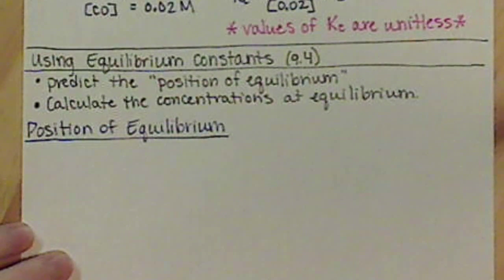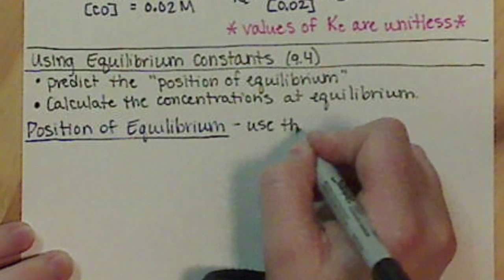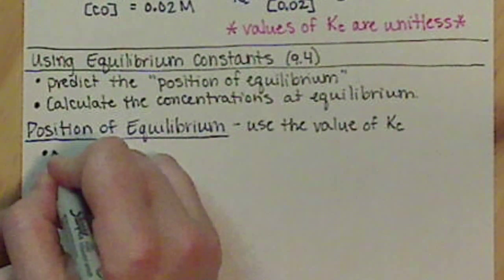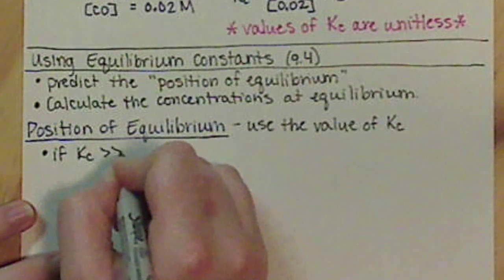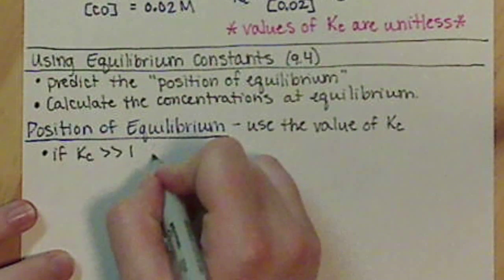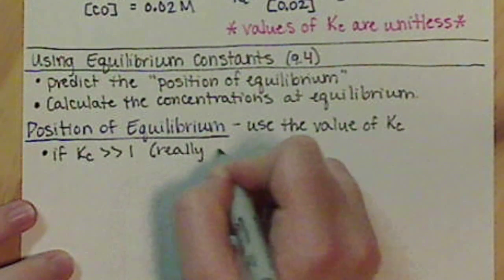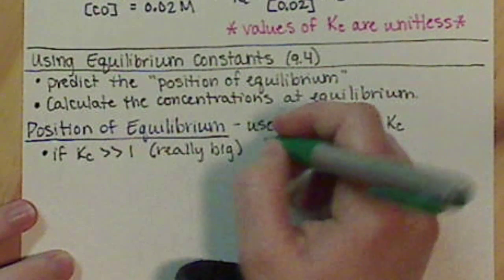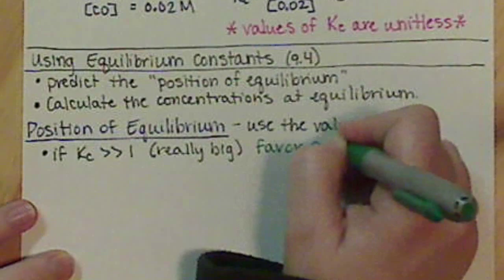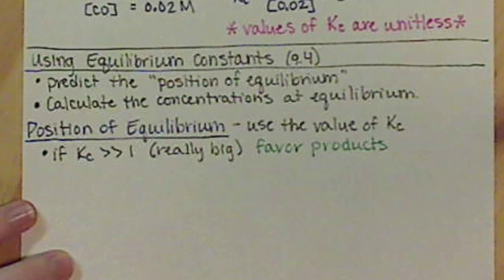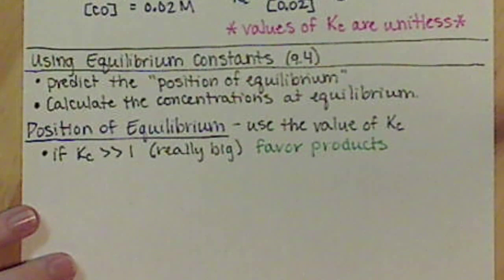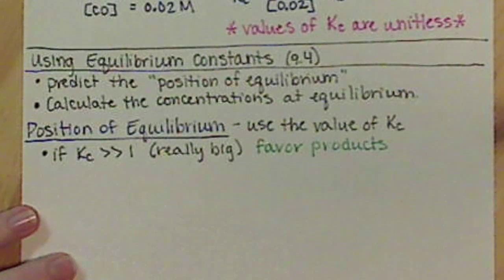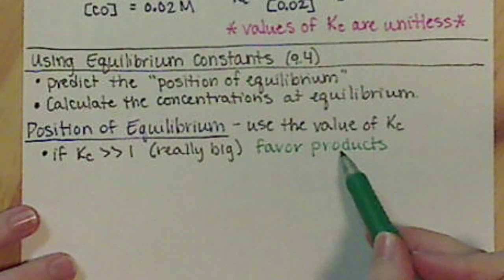Basically what this is going to do is use the value of Kc to determine this. So if Kc is much, much greater than 1, if it's really, really big, what's going to happen is our equilibrium is going to favor our products. Since our equilibrium constant expression is our products over our reactants, if Kc is much larger than 1, that means that our numerator, the number up top is really big. So that's the concentration of our products is really, really high.